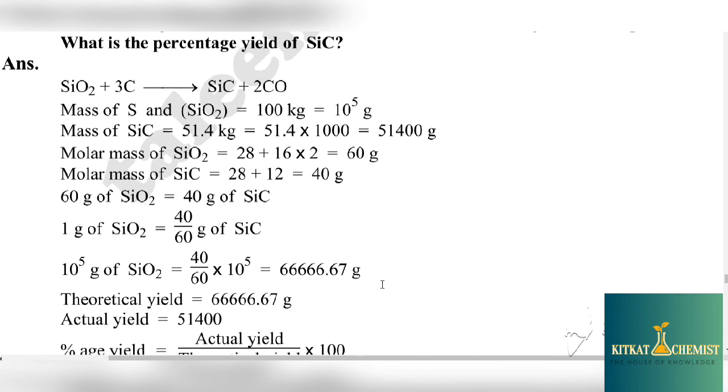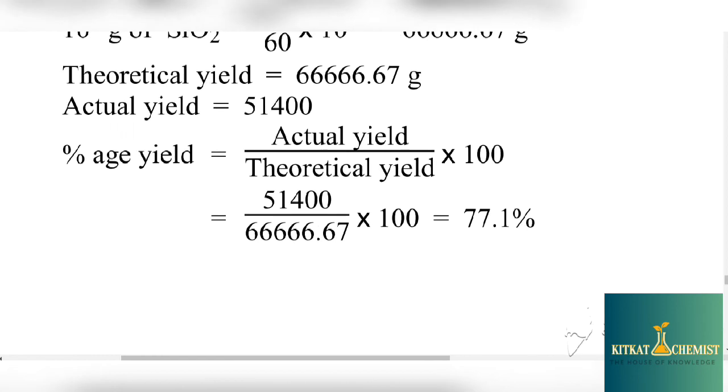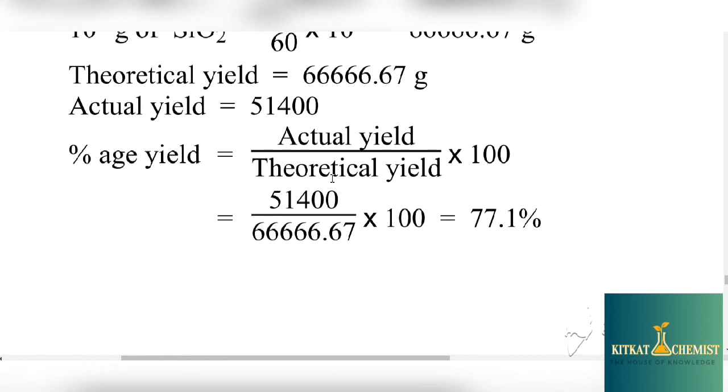Our question asks for percentage yield. For that purpose, actual yield divided by theoretical yield multiplied by 100. We divide actual yield by theoretical and multiply by 100. The answer is 77.1 percent.